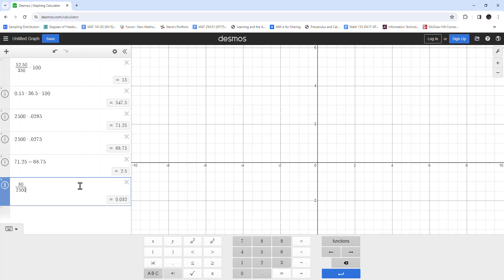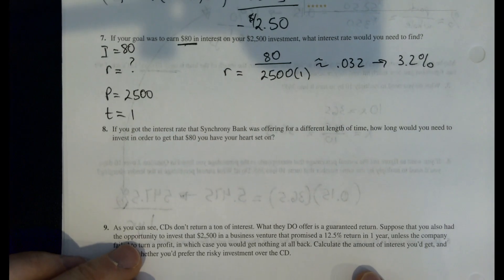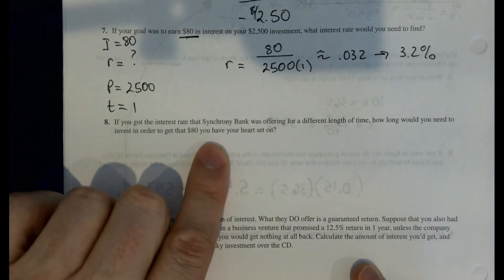We'll scamper over to Desmos. Pretty basic type in. And we're looking at 0.032. These days, interest rates are pretty high. So we would probably be able to get this. In fact, I think I've seen interest rates up in the 5 percentage range.